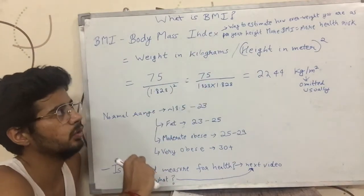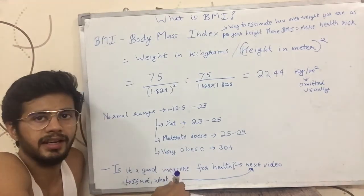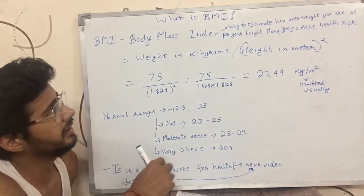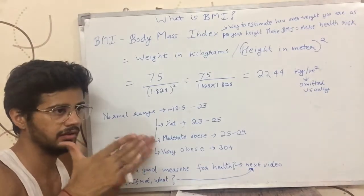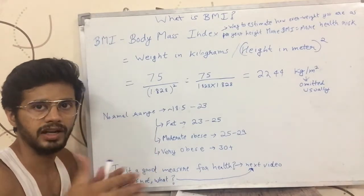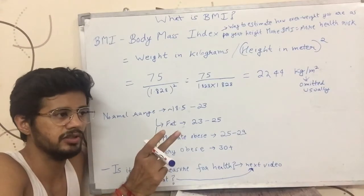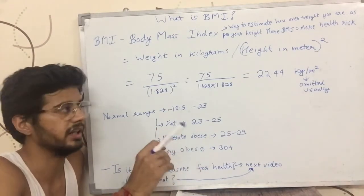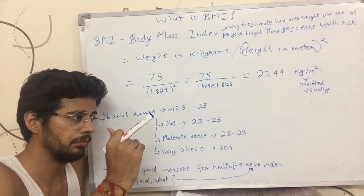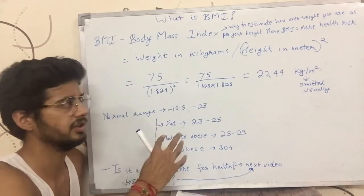BMI is a way to estimate how overweight you are, or how much more weight you are carrying as per your height. Maybe you are carrying the right weight as per your height, or maybe you are carrying more weight. It gives you an estimate of whether you are lying within a desired range where your weight is considered healthy relative to your height. If you exceed that range and your BMI goes up, it means your health risk is increasing. And if you go below that range, you are going towards malnutrition or deficiencies.